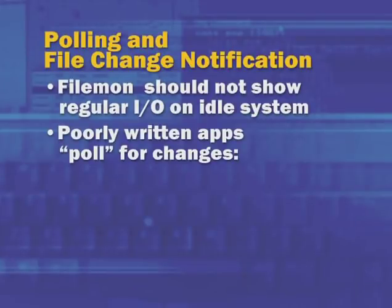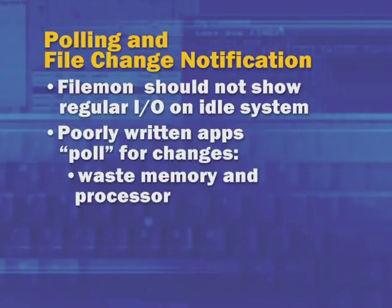Polling is bad from a performance standpoint because every time a process wakes up for file system activity, the system scheduler must switch to that process — a heavyweight operation that eliminates CPU cache information, soaks up CPU cycles, and keeps parts of the process in memory at all times. Applications such as antivirus or antispyware solutions across an enterprise can exhibit polling. If you see it, contact the vendor or find a replacement application that doesn't exhibit that behavior.